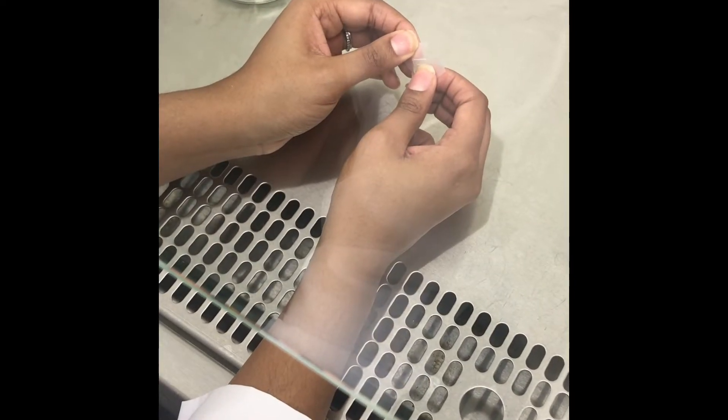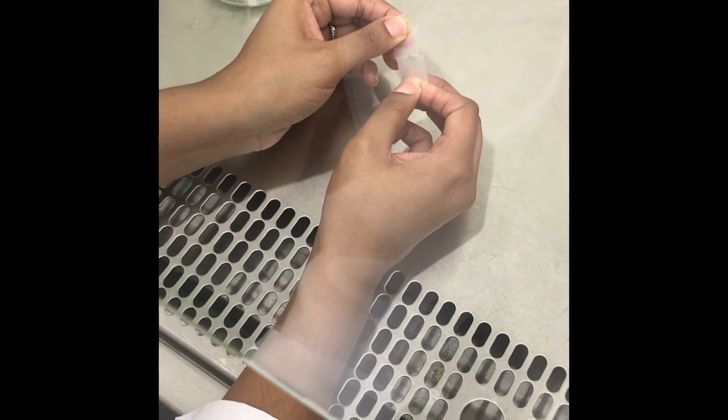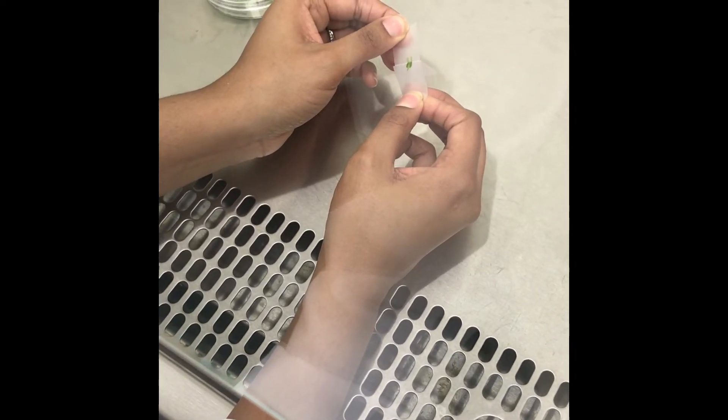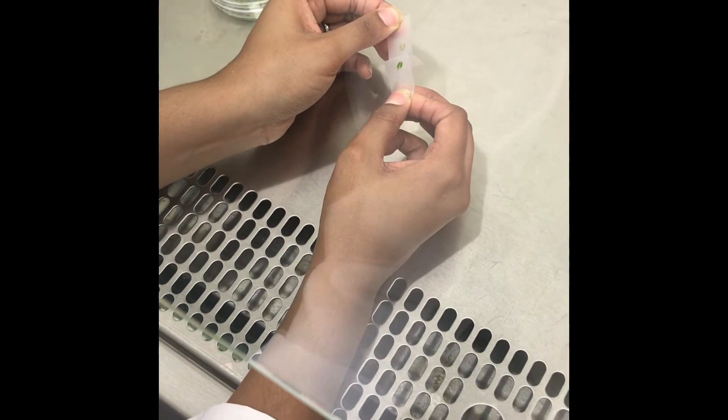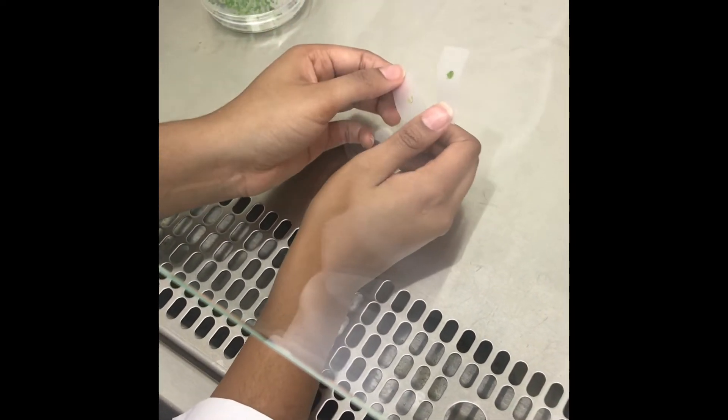So now we're going to slowly remove the pieces of tape from one another. And as you'll see we'll have two separate layers of cells.